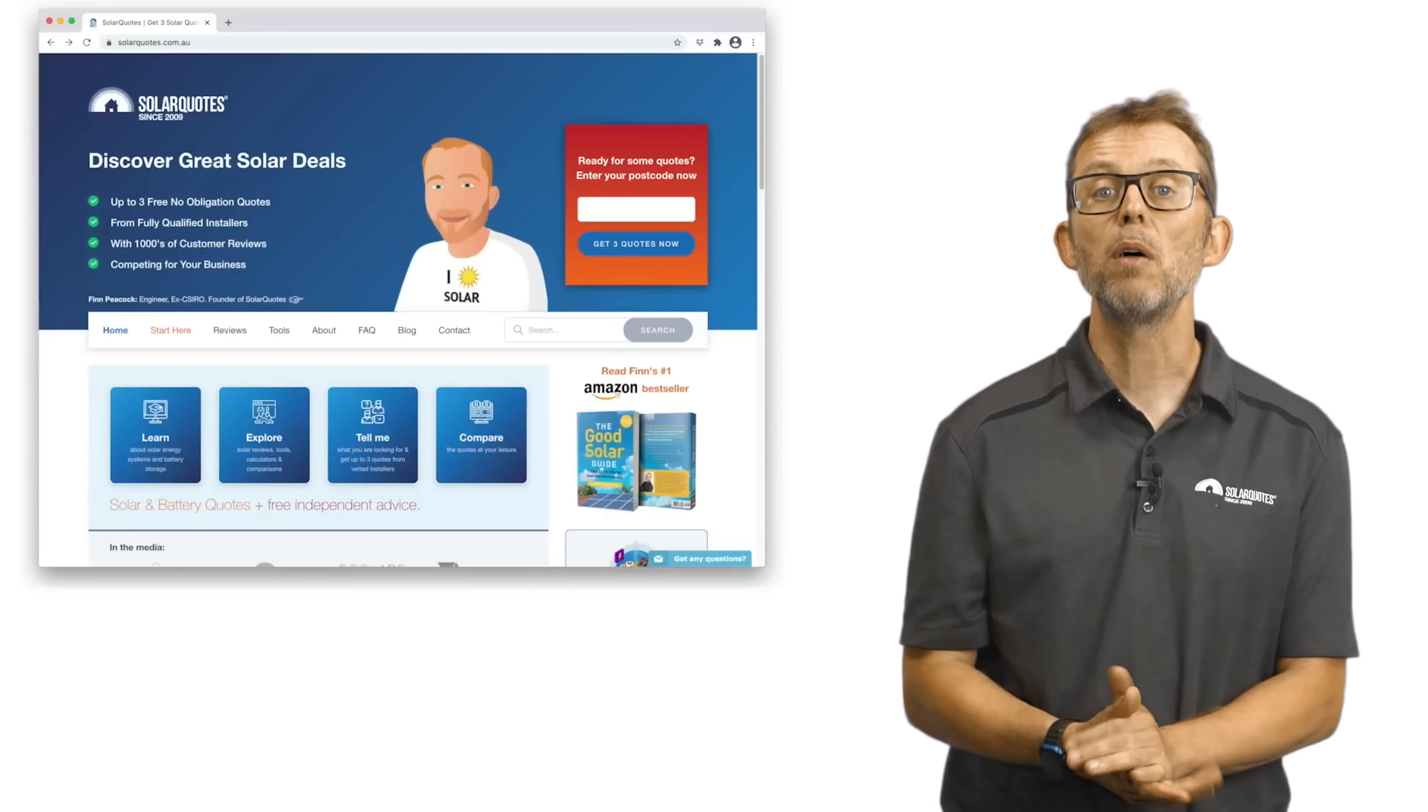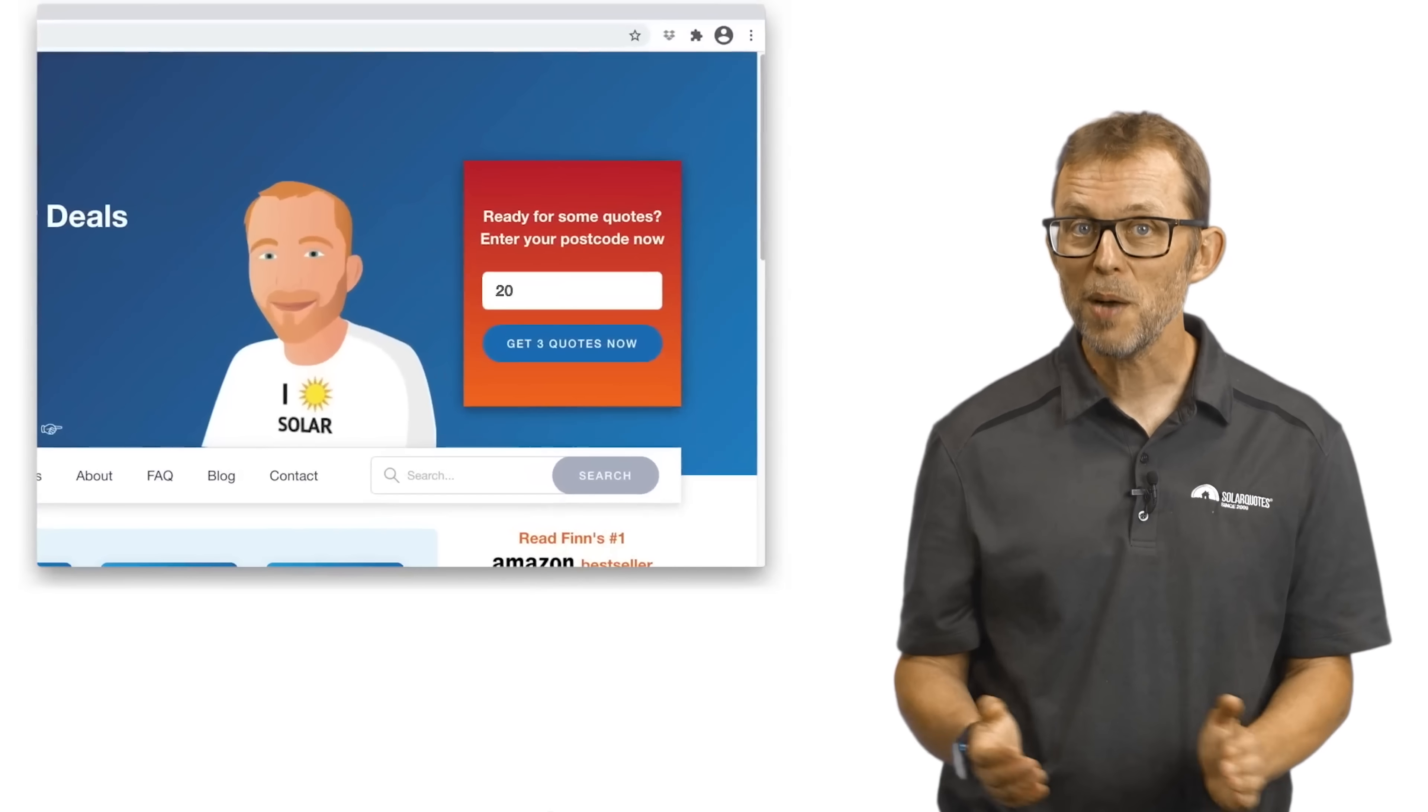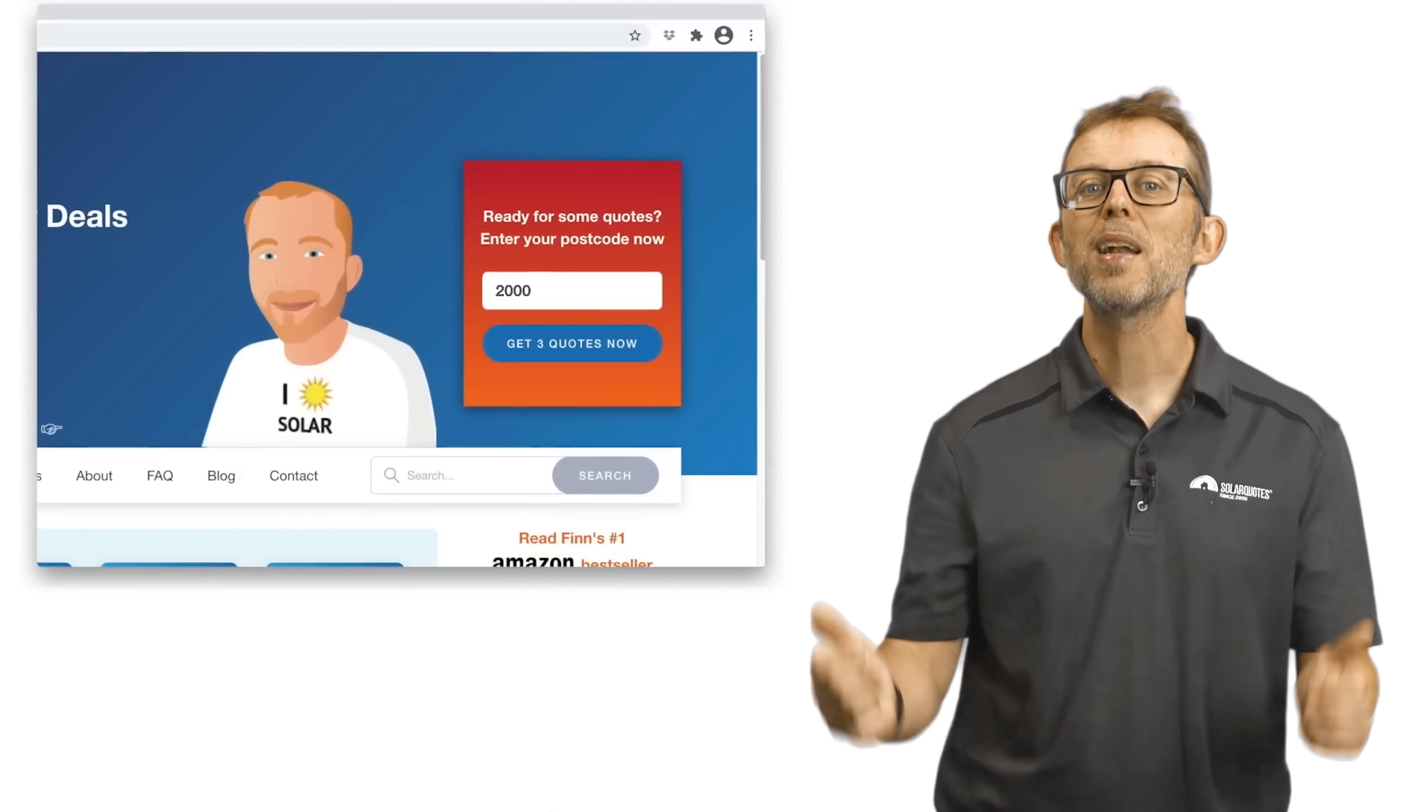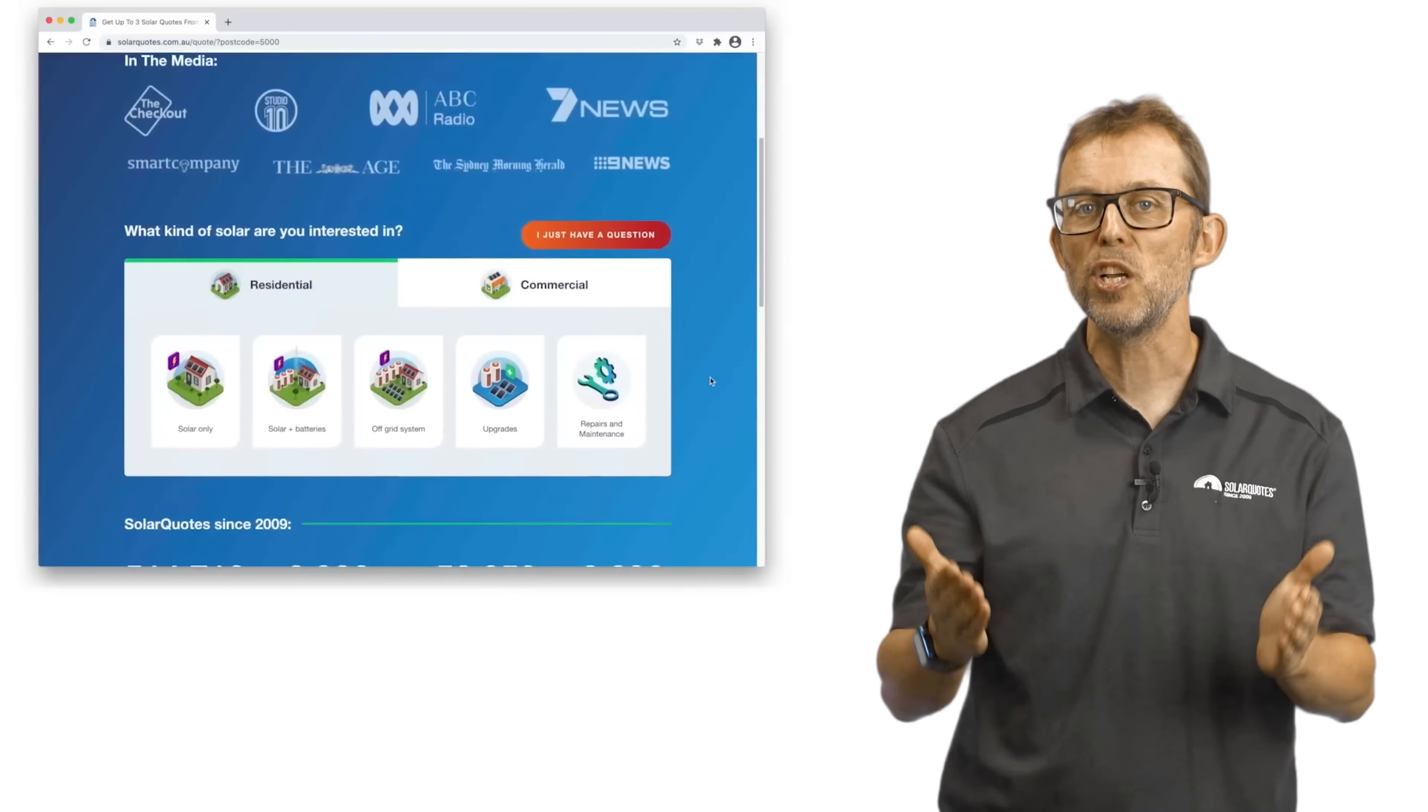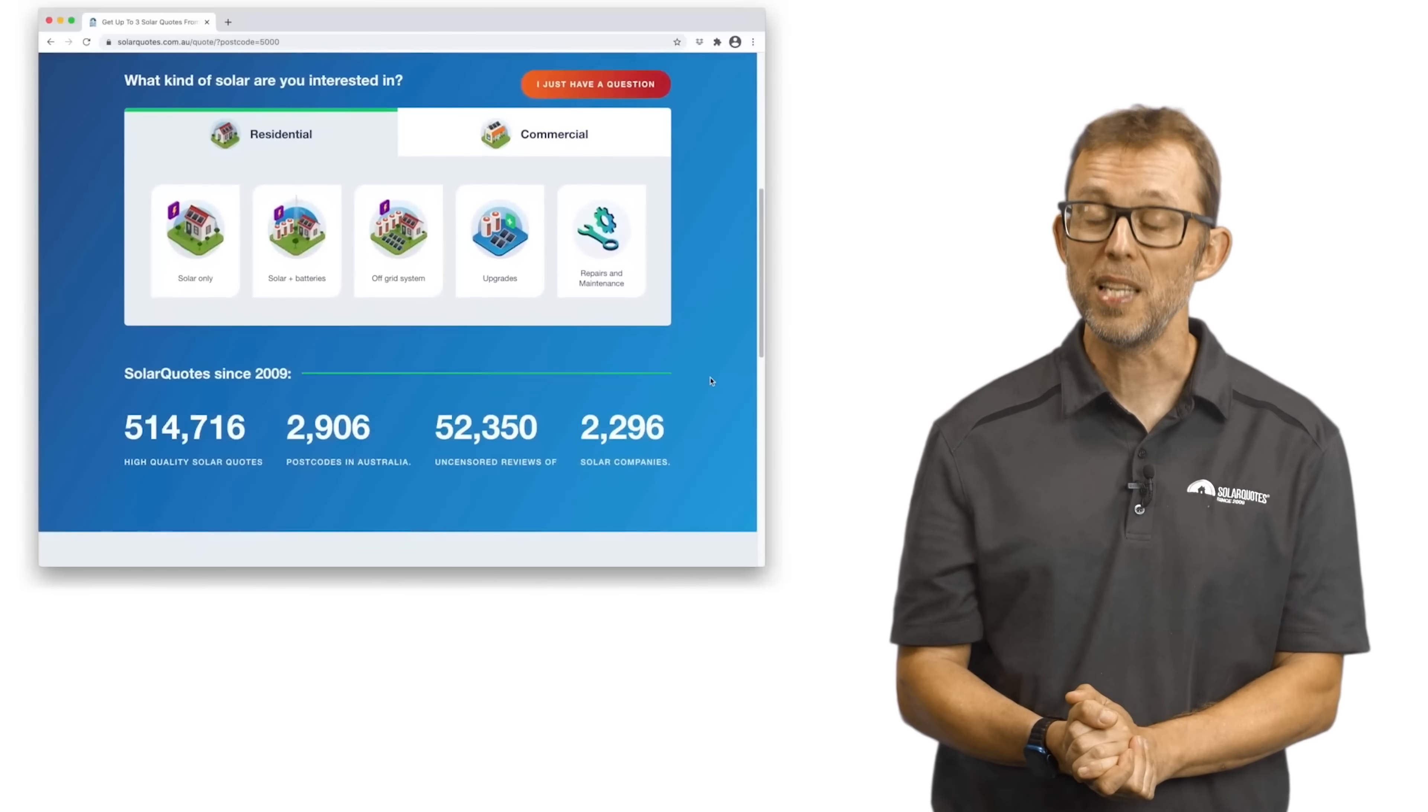I'll just take a moment to say that I've been running the website Solar Quotes for the last 14 years. In that time, I've built up a great network of pre-vetted installers that can give you quotes for solar and batteries for your home. Just visit my website solarquotes.com.au, pop your postcode into the top right box, fill in the form, and I'll do my absolute best to match you with up to three installers I trust in your area.